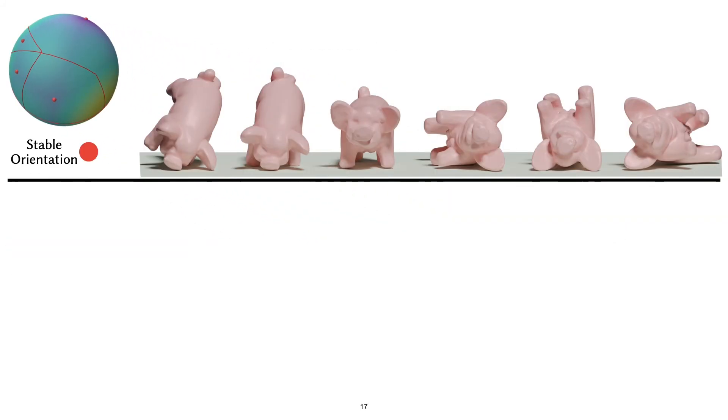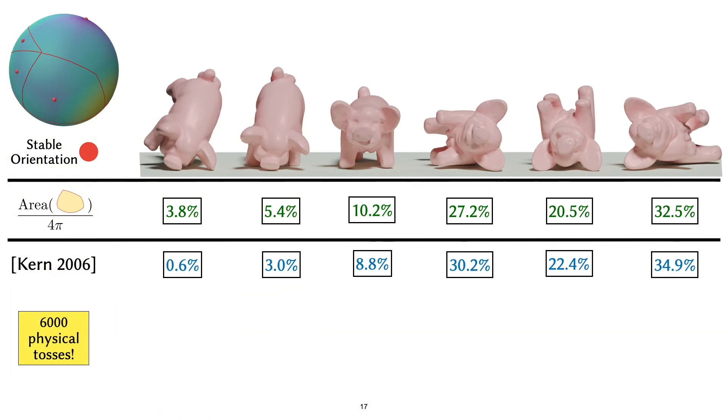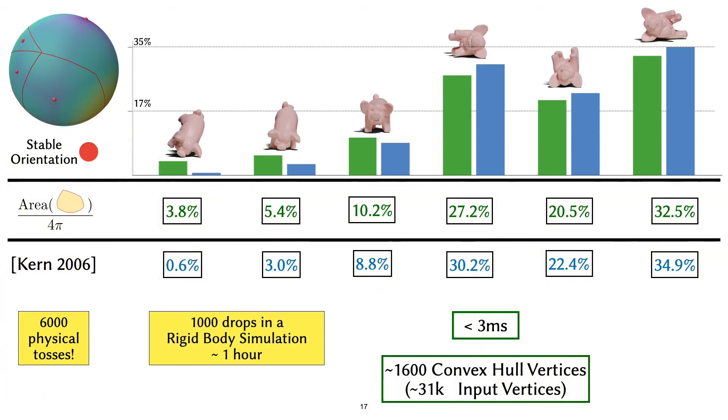We can finally compute the probabilities that we wanted. Every stable orientation has a local minima that has a corresponding ascending manifold. And once we compute their areas, we get exactly the probabilities that we wanted. Just to compare this with the earlier study that we mentioned, we see that our method and this physical study are a pretty close match. They differ by a maximum of around 3% in each stable orientation probability. This whole procedure takes less than 3 milliseconds for this model that has more than 1600 convex hull vertices. If we wanted to do this in a rigid body simulation by dropping it a thousand times, we could have taken up to an hour.